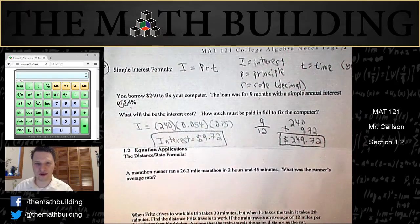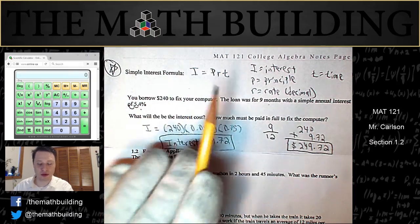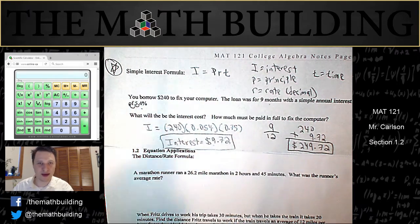So in the last section, we learned the simple interest formula, interest equals principal times rate times time, you should memorize that.